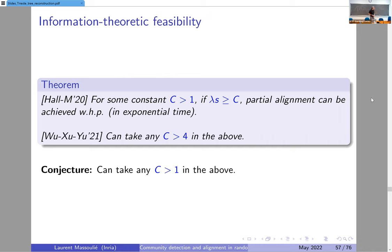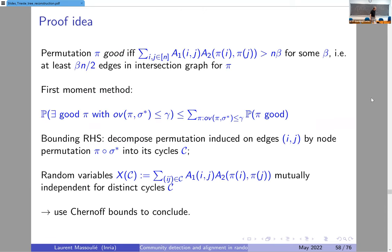The sharpest feasibility result is due to Yihong Wu, Jiaming Su, and Sophie Yu, from a recent paper. We had a worse constant in an earlier paper. Let me give some of the ideas for the feasibility result.